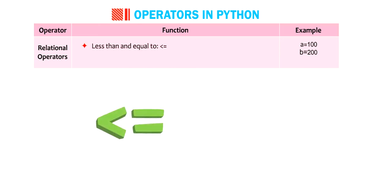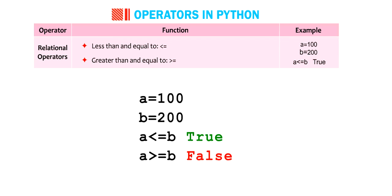Less than and equal to. Greater than and equal to. A less than equal to B. True. A greater than equal to B. False.